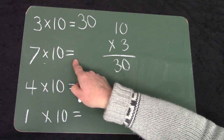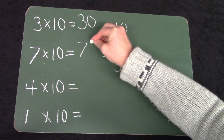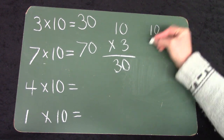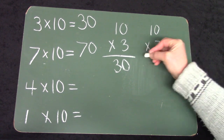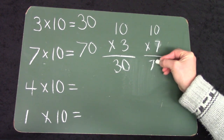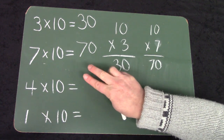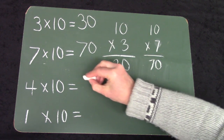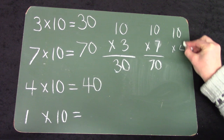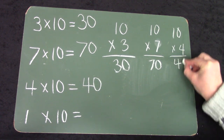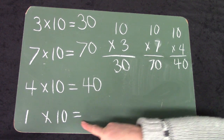What about this question — seven groups of ten equals? Did you say seventy? Well done. We could also write this vertically. And four groups of ten equals: ten, twenty, thirty, forty.